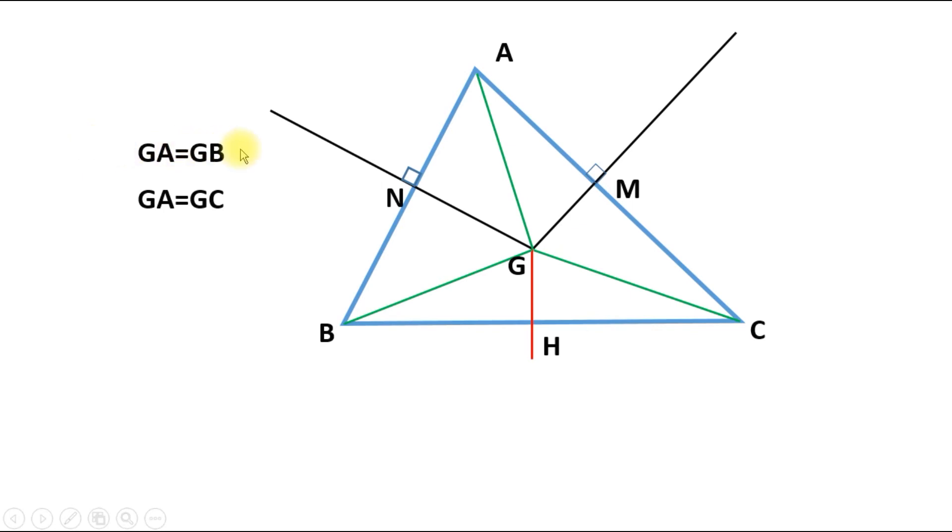Now since GA is equal to GB and GA is equal to GC, we conclude that GB is equal to GC.